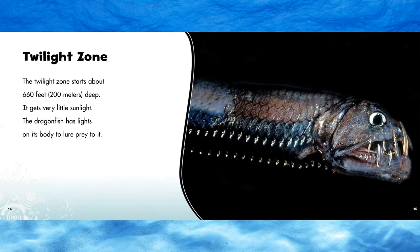Twilight zone. The twilight zone starts about 660 feet or 200 meters deep. It gets very little sunlight. The dragonfish has lights on its body to lure prey to it. Lure means to attract — they have the lights so that fish will swim up to them so they can eat them.